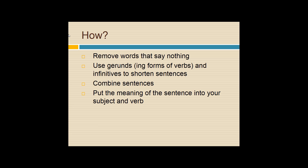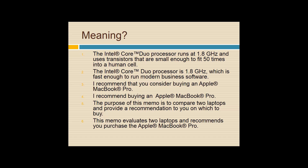So how do you do this? Remove the words that say nothing — we'll talk about more of those. Use gerunds, the -ing form of verbs, and infinitives to shorten sentences. Combine sentences — we'll talk about that. And put the meaning of your sentence into your subject and verb, and focus on keeping your subject and verb close together.